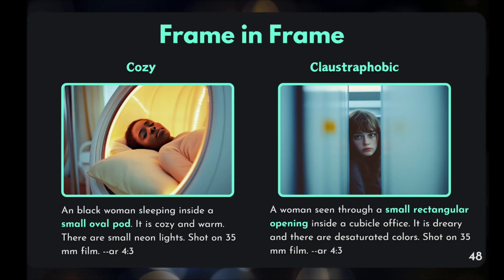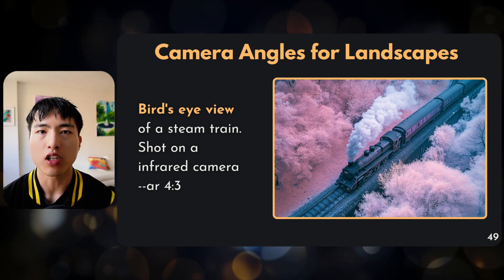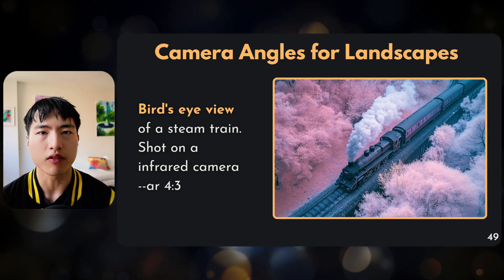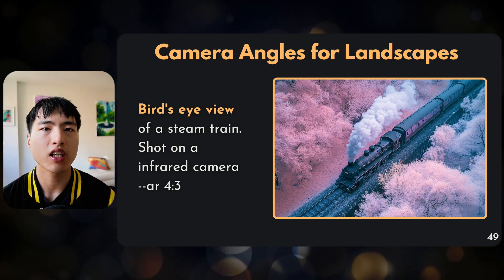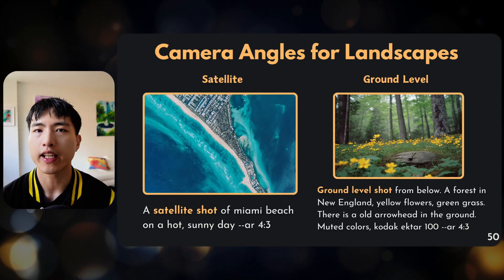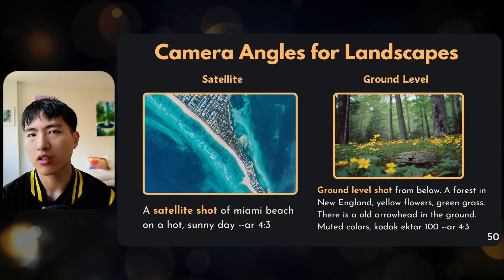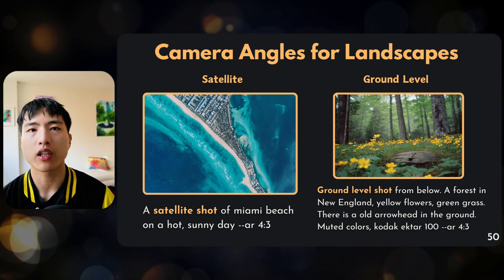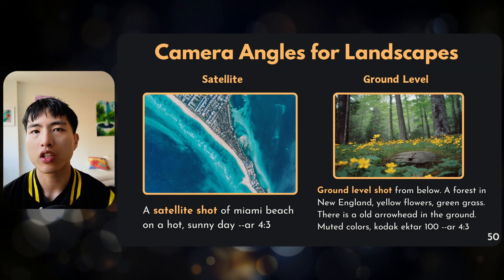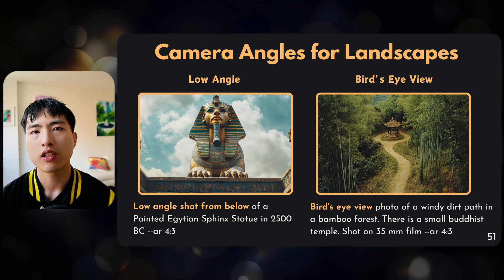All the camera angles and shots described so far also apply to landscapes or really anything else. For example, a bird's eye view of a steam train is similar to an overhead shot. The satellite shot pulls the camera back even further and gets even higher in the air. Or you can go all the way down to a ground level shot, where the camera is literally placed on the ground taking a photograph — think of it like crawling on the ground and looking around. Low angle shots also make things look larger, more imposing, and more majestic.